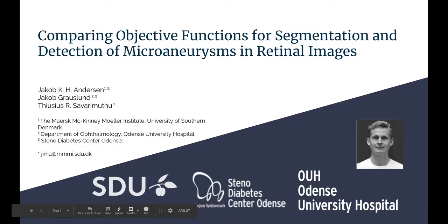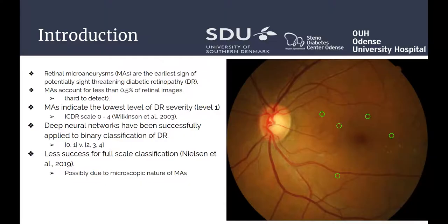Hello, my name is Jacob and I will be presenting our work on comparing objective functions for segmentation and detection of microaneurysms in retinal images. Microaneurysms are the earliest sign of potentially sight-threatening diabetic retinopathy, and they account for less than 0.5% of retinal images, meaning that they are hard to detect.